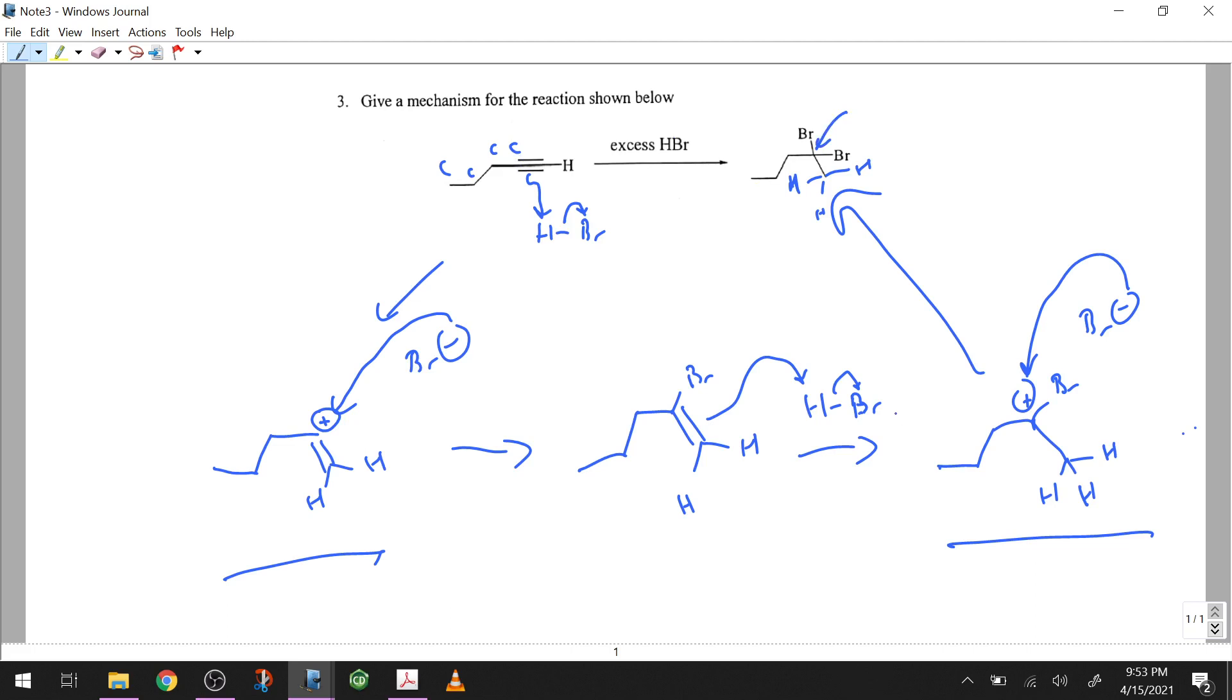So, you can see the end here with my one, two, three carbons, and then this is carbon number four, where everything happened, where the bromine ended up.